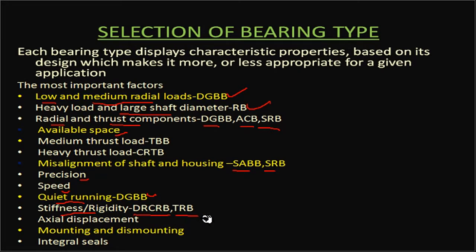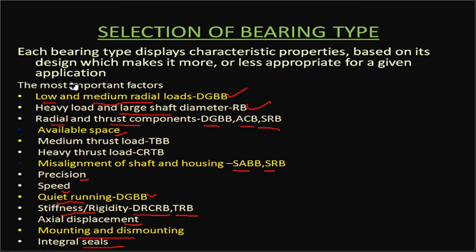Additional selection parameters include precision requirements and running speed. For quiet operation with minimal noise, the deep groove ball bearing is preferred. For high stiffness and rigidity, double-row cylindrical roller bearings or taper roller bearings are appropriate. Other parameters to consider are axial displacement allowance, ease of mounting and dismounting, and whether seals are integral with the bearing or must be provided externally.